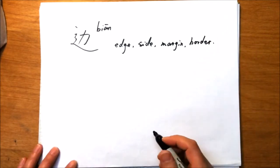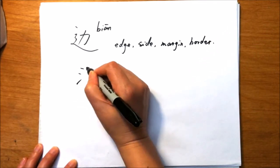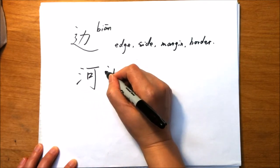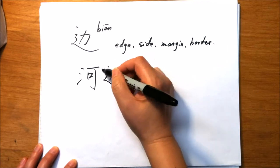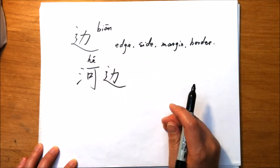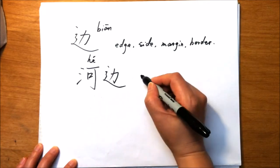For example, 河边. 河 means river. 河边 means riverside.